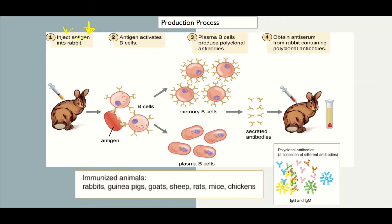Once you have obtained your antigen and conjugated it to an adjuvant where necessary, then you're going to identify a host to immunize. The host can be rabbits, guinea pigs, goats, sheep, rats, mice, chickens, etc.